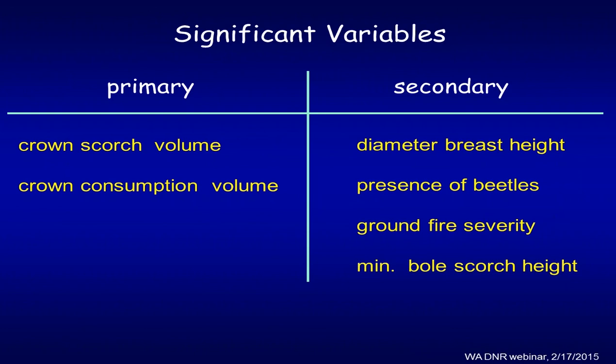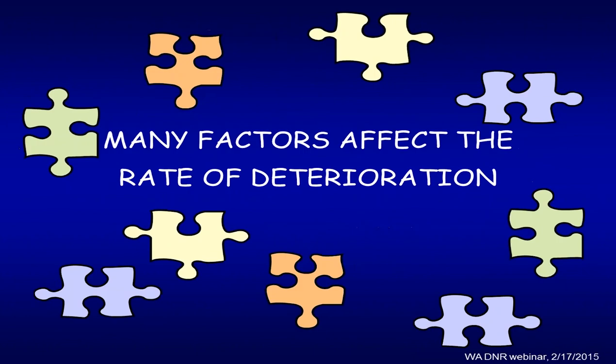Additional predictors include bole scorch height. There's research and publications on other species as well, with a lot of data out there to help you predict mortality. There are many related factors that will influence what happens in a tree, and one formula doesn't fit all.